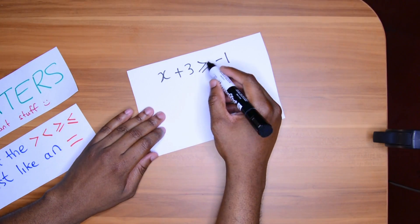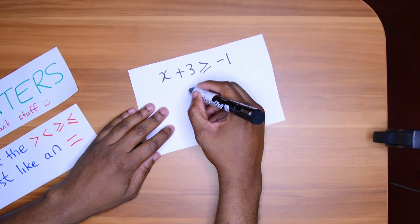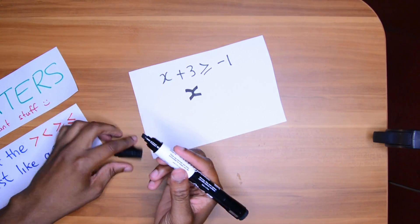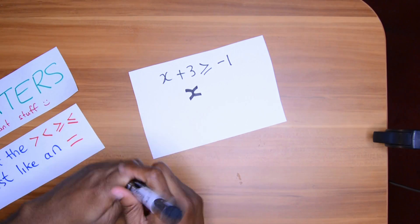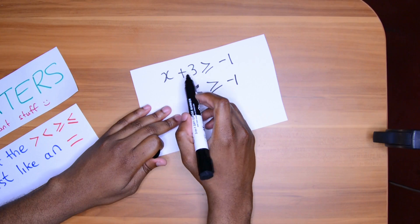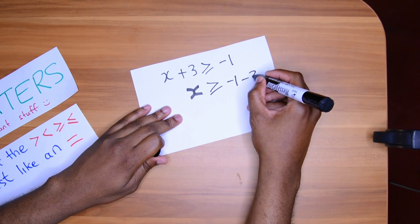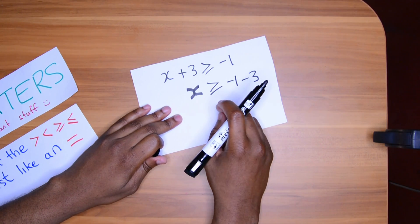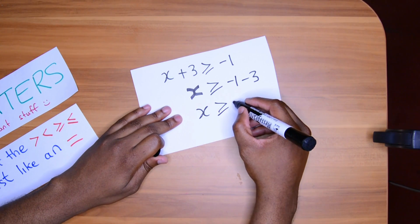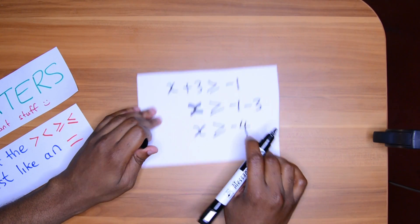X plus three is greater than or equal to negative one. X will be greater than or equal to negative one. We want to bring across this three to meet his friend. The tree comes across. You think of it as an equal sign. X is greater than or equal to negative four. Simple stuff, right?